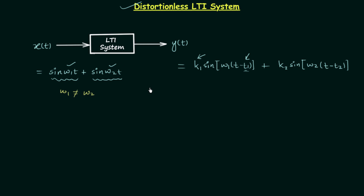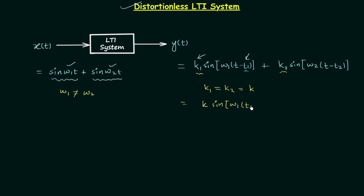Now we will focus on the modifications we can do to have a distortionless LTI system. A distortionless LTI system should not have magnitude distortion or phase distortion, so we are required to eliminate both. To eliminate the magnitude distortion, the two terms should have the same amount of amplification — this means k1 should be the same as k2. Let's say they are both equal to k, so in place of k1 we will have k·sin(w1·t − ...).